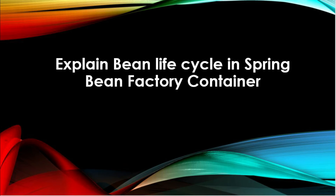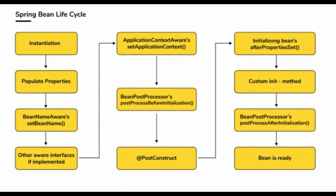Explain the bean lifecycle in Spring Bean Factory Container. The IoC container instantiates the bean from the bean definition in the XML file. Spring then populates all of the properties using dependency injection as specified in the bean definition. The bean factory container calls the setBeanName method, which takes the bean ID, and the corresponding bean has to implement the BeanNameAware interface. The factory then calls the setBeanFactory method by passing an instance of itself, only if the BeanFactoryAware interface is implemented in the bean. If a BeanPostProcessor is associated with the bean, the pre-process before initialization methods are invoked. If the init method is specified, it will be called. Lastly, post-process after initialization methods will be called if there are any BeanPostProcessors associated with the bean that need to be run post-creation.